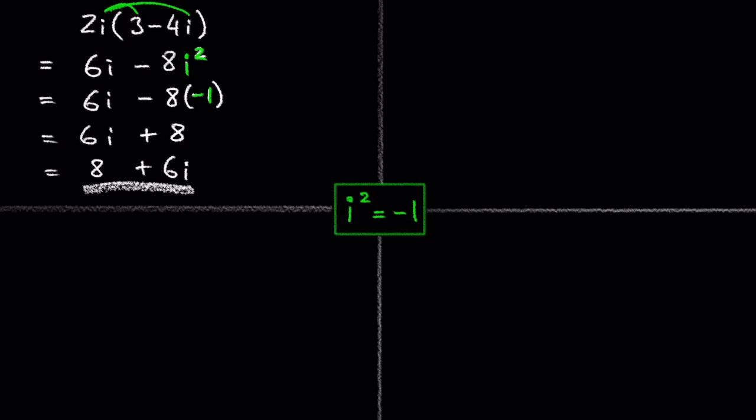Let's look at another example, 5 minus 2i times negative 3 minus 7i. In this example, we are going to use the FOIL method just like we do with polynomials.